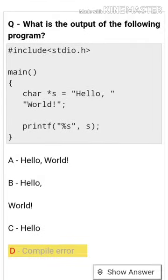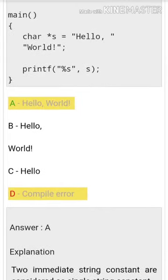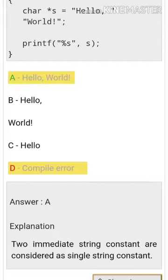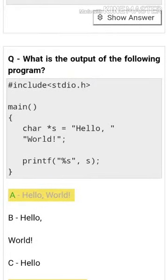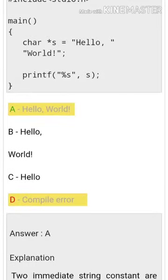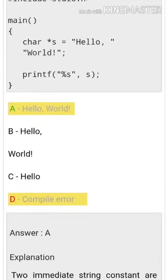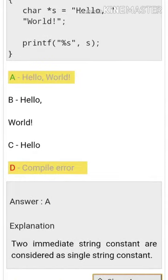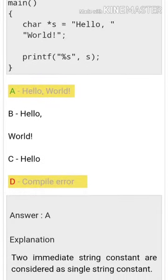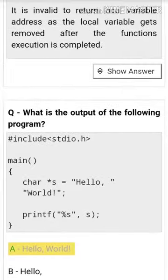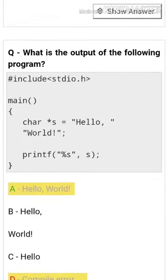What is the output of the following program? The answer is hello world. Immediate string constants are considered as a single string constant. Two immediate strings concatenate together, so the output is the single continuous string hello world.